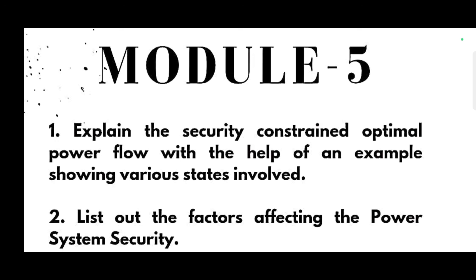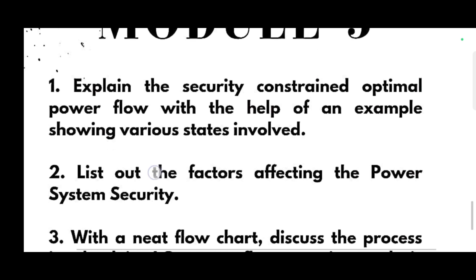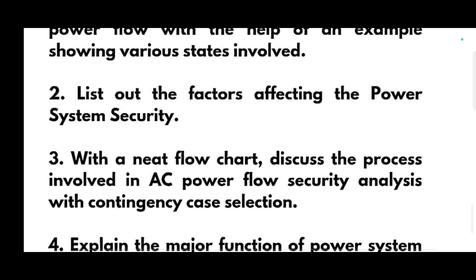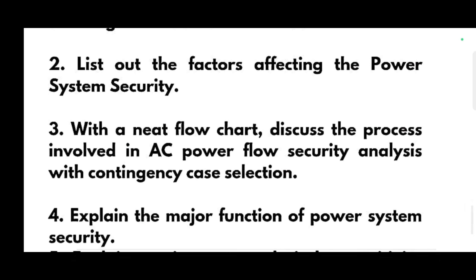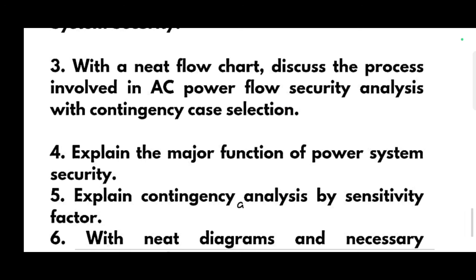Module 5 is also a passing module. Explain the security-constrained optimal power flow with the help of an example showing various states involved. List out the factors affecting the power system security with a neat flow chart. Discuss the process involved in AC power flow security analysis with contingency case selection — this is again a super important question that comes in the examination most of the times.